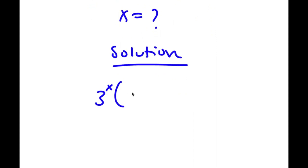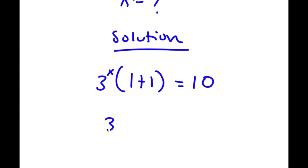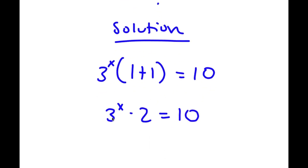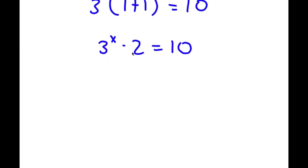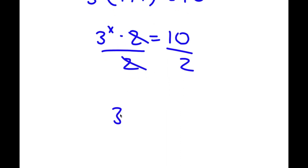Now I have 3 to the power of x times 1 plus 1 is equal to 10. Now 1 plus 1 is obviously equal to 2, so now I have 3 to the power of x times 2 is equal to 10. I want to get rid of this 2 to isolate x, so I'm going to divide both sides by 2. These two cancel out, and I'm left with 3 to the power of x is equal to 10 divided by 2, which is the same thing as 5.